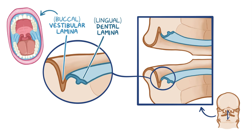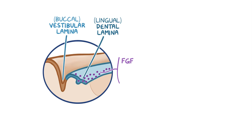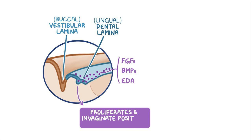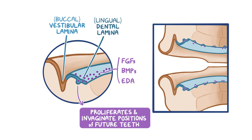Signal proteins such as FGFs, BMPs, and ectodysplasin cause the cells within the dental lamina to start proliferating and to invaginate in the positions that correspond to the locations of future teeth. These localized, enlarged projections within the dental lamina are known as the dental placodes.